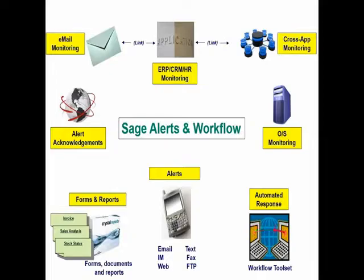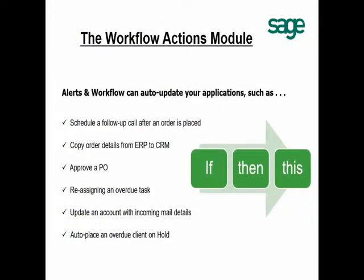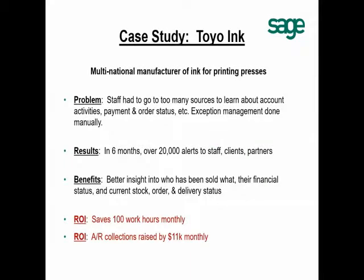The final component is the workflow — the ability for Alerts and Workflow to go back into Sage 300 and actually add or update data. If a customer is past due, have Alerts and Workflow go into Sage 300 and put that customer on credit hold. If an inventory item drops to its reorder level, have it create a purchase order in Sage 300. And if a customer gets put on credit hold, have it go into Sage CRM to schedule a phone call between the account manager and the client.